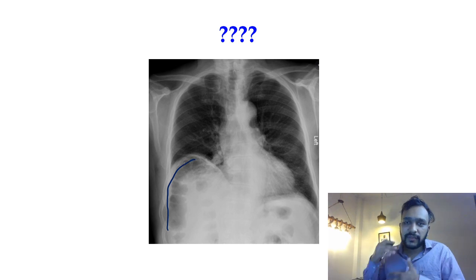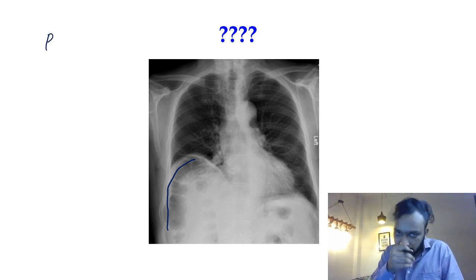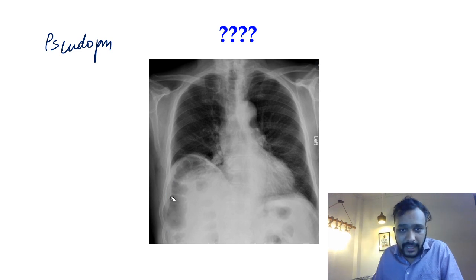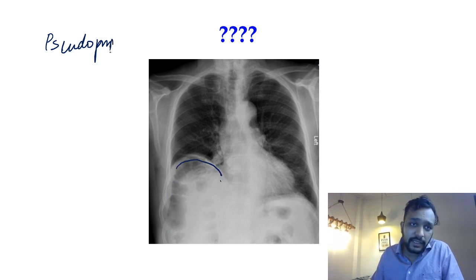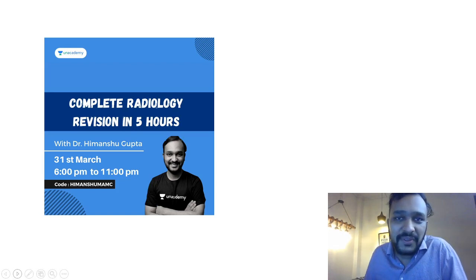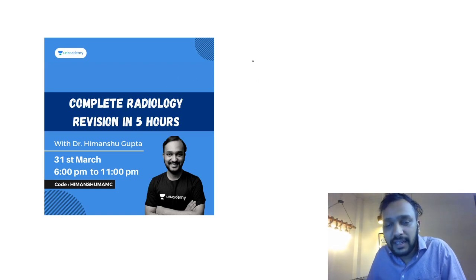Sometimes the descending colon will come between the liver and the diaphragm. This is known as pseudo-pneumoperitoneum, because it will appear that there is free gas under the right dome of the diaphragm. This condition is known as Chilaiditi syndrome.